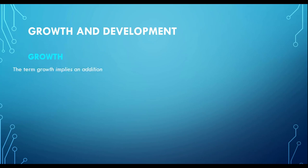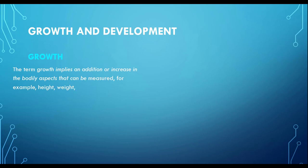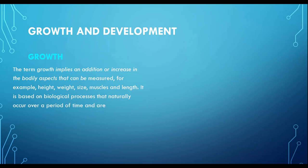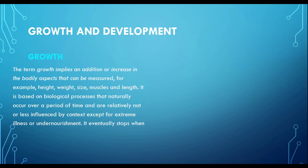The term growth implies an addition or increase in the bodily aspects that can be measured — for example, height, weight, size, muscles and length. It is based on biological processes that naturally occur over a period of time and are relatively less influenced by context, except for extreme illness or under-nourishment. Growth eventually stops when the body parts reach the peak of their growth.